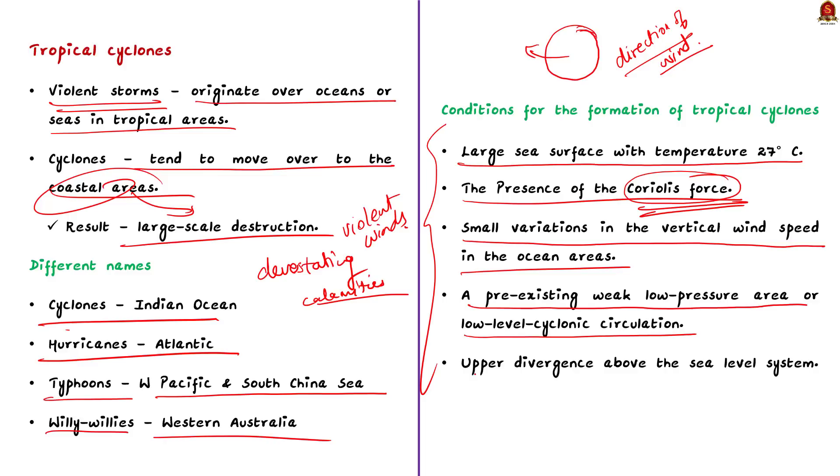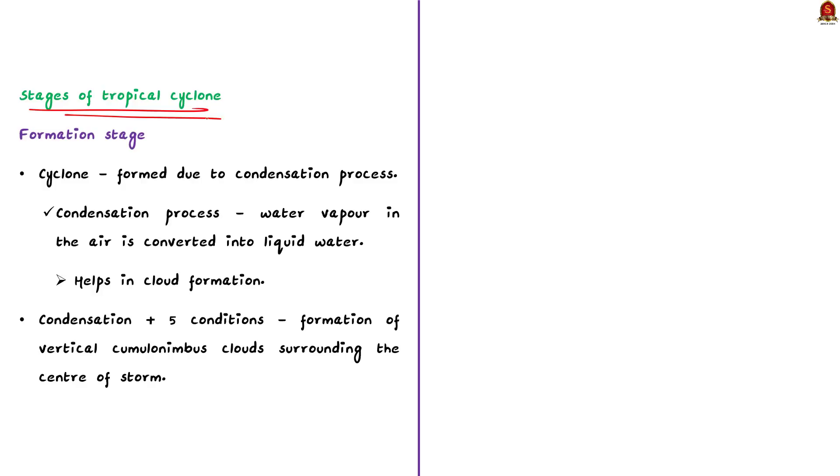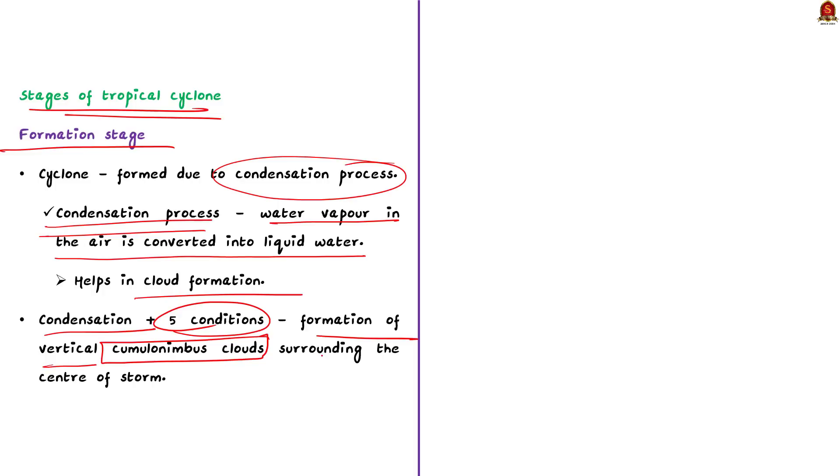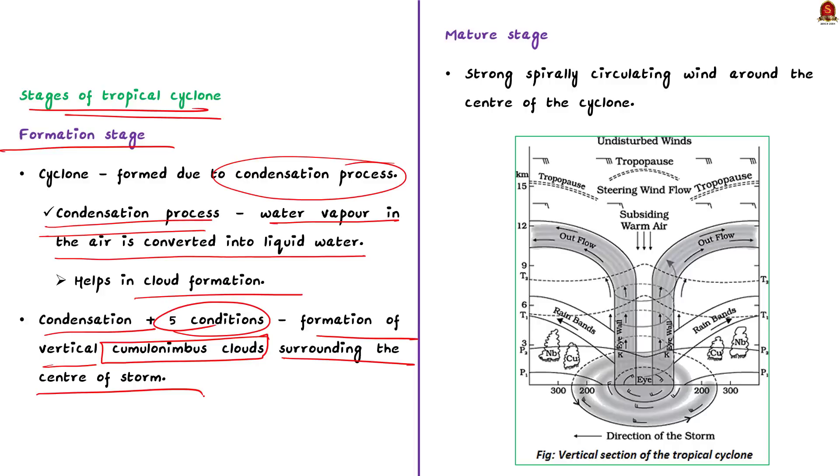Now, let us see about the stages of tropical cyclones. See, there are generally three stages associated with cyclones. They are the formation stage, mature stage and dissipation stage. Now, let us see them one by one. First, let us take the formation stage. See, basically the cyclone is formed due to the condensation process. The condensation is the process through which water vapour in the air is converted into liquid water. This condensation process only helps in cloud formation. So, the condensation process along with the five conditions we just saw encourage the formation of vertical cumulonimbus clouds. These clouds are formed around the centre of the storm. This leads to the formation of cyclones. See, with the continuous supply of moisture from the sea, the storm is further strengthened.